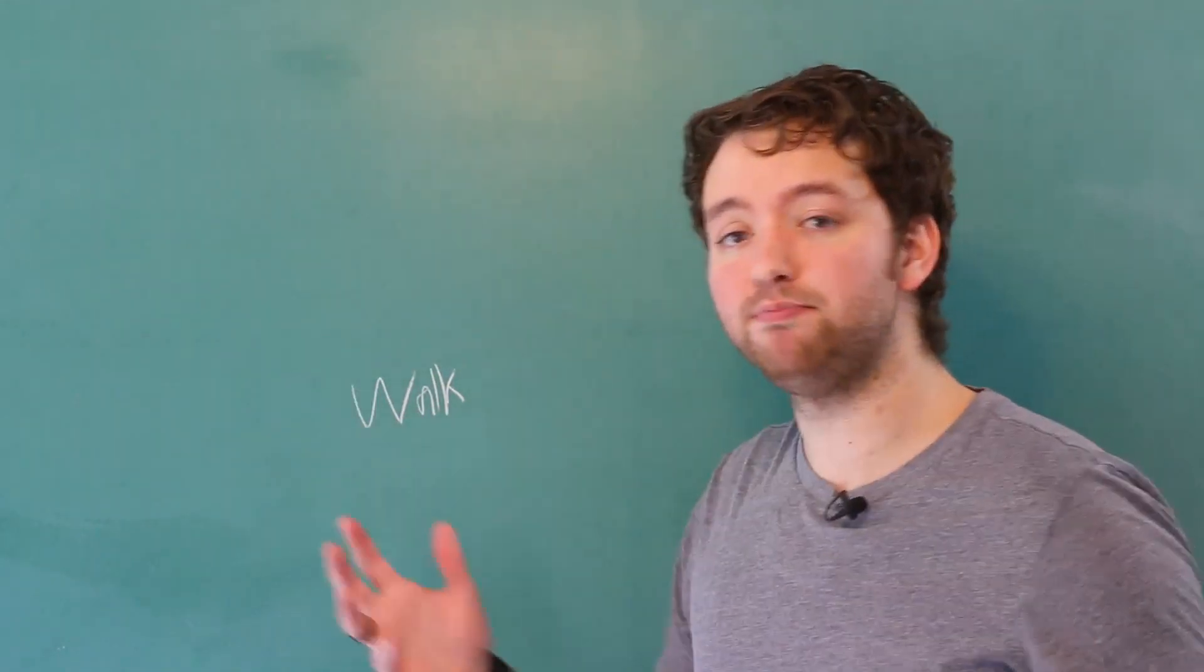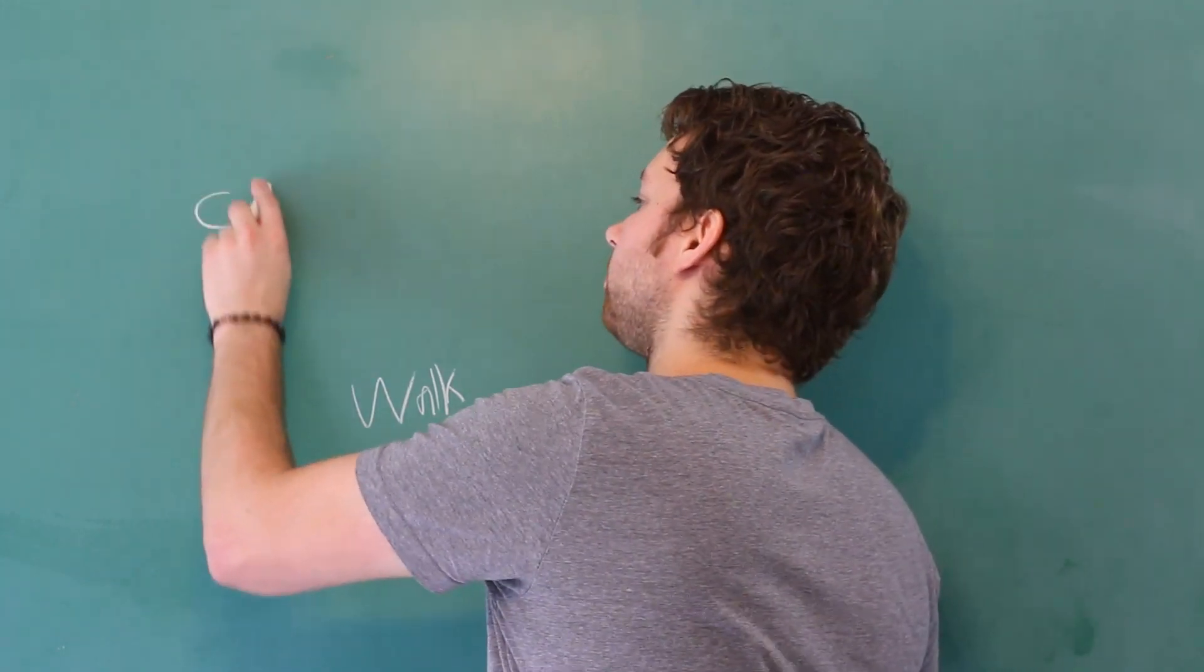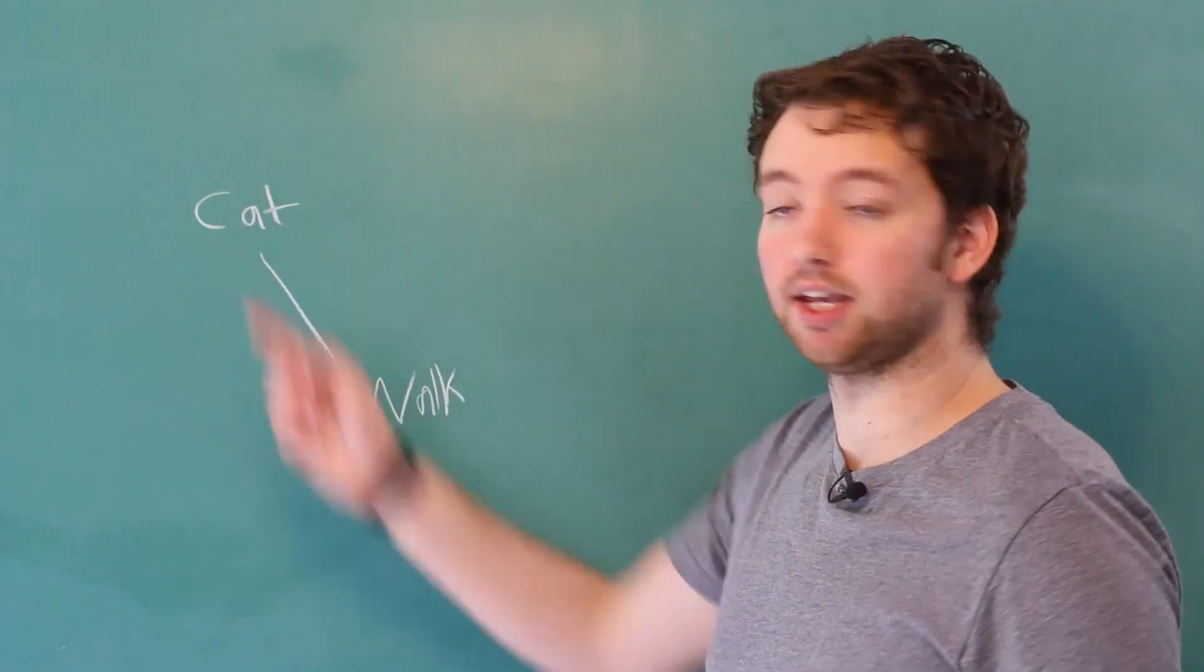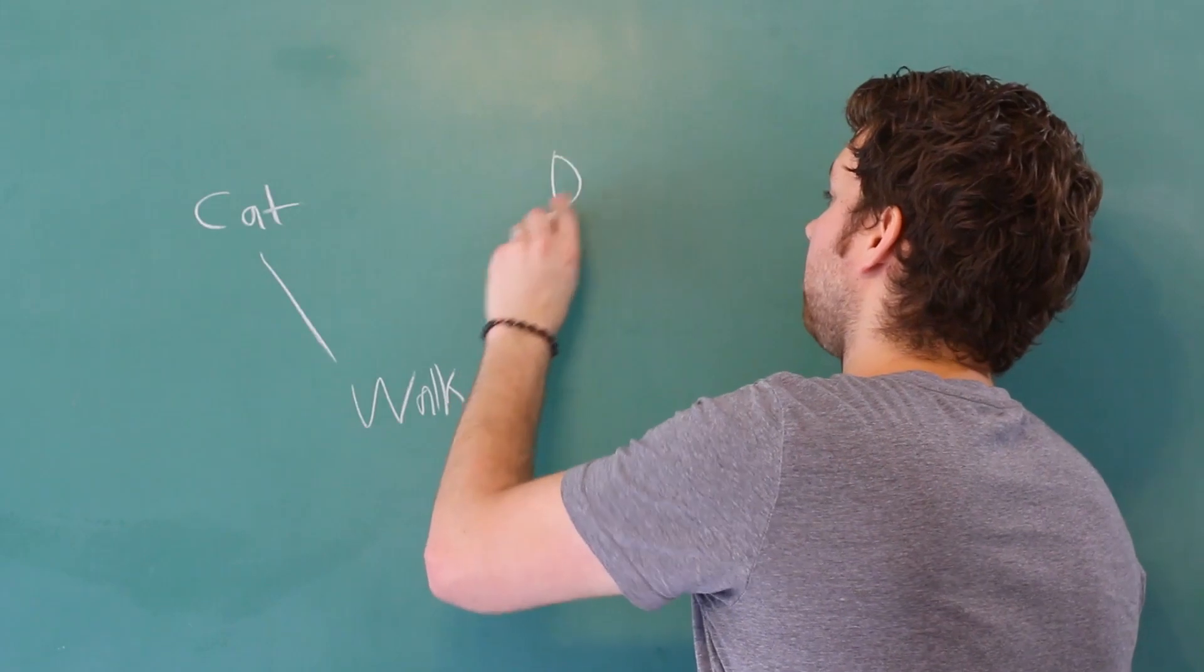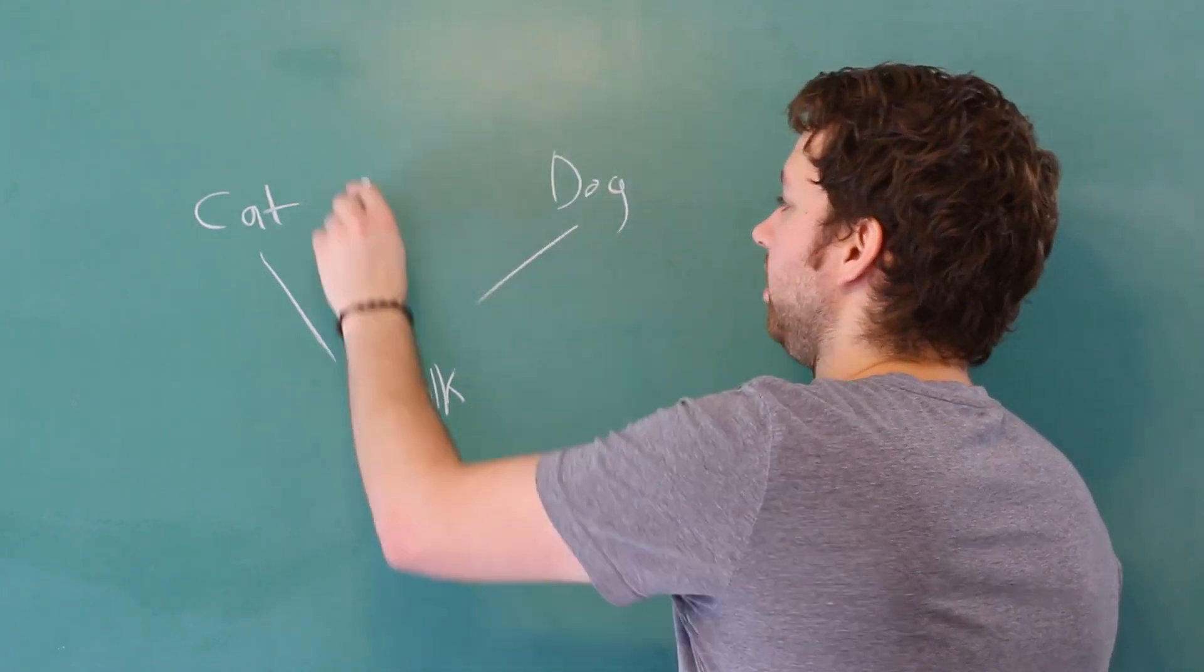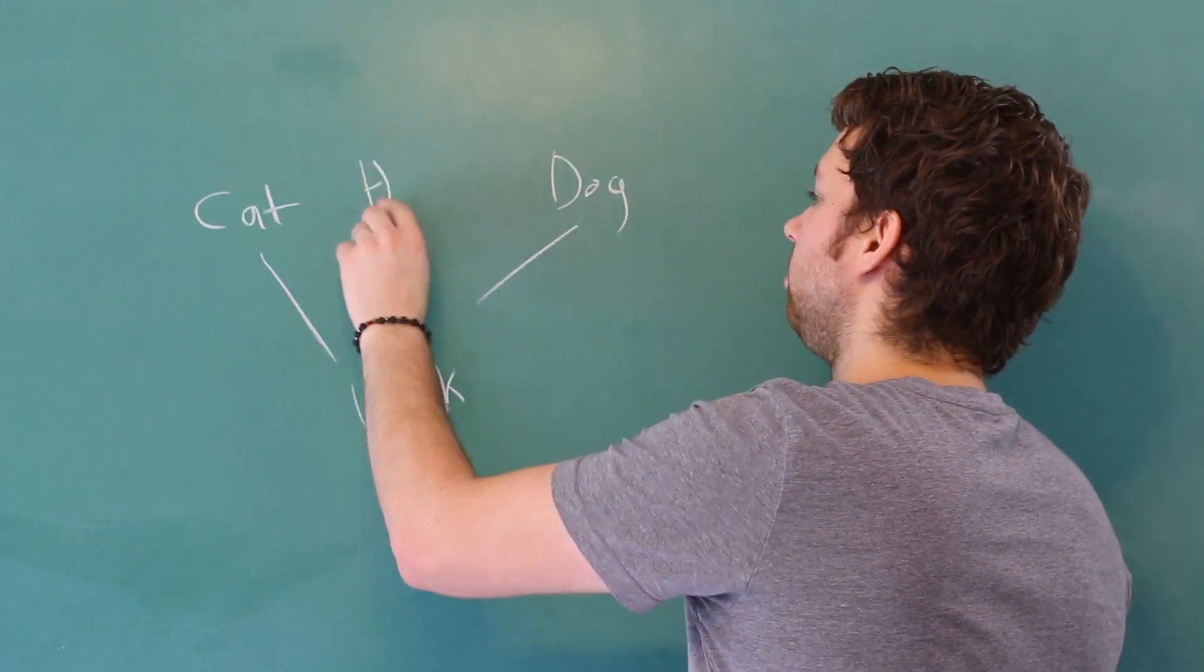And then classes can implement that interface. So that can be implemented by cat, that can be implemented by dog, that can be implemented by human, and so forth.